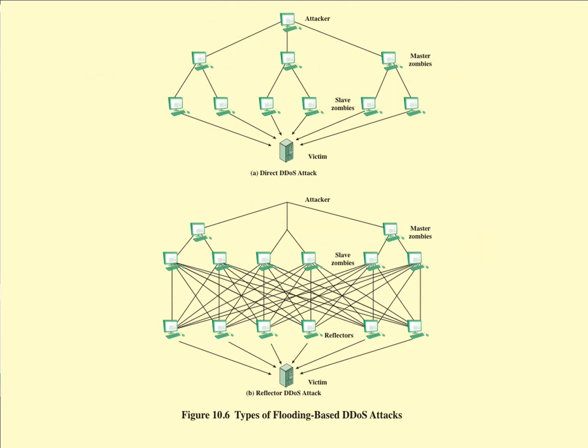One way that we can classify these is either as a direct DDoS attack or as a reflector DDoS attack. In the direct attack, the attacker implants zombie software in a number of computers through the internet, and then those are the ones that actually attack what is shown in the diagram as the victim. With the reflector DDoS attack, there's an extra layer of machines.